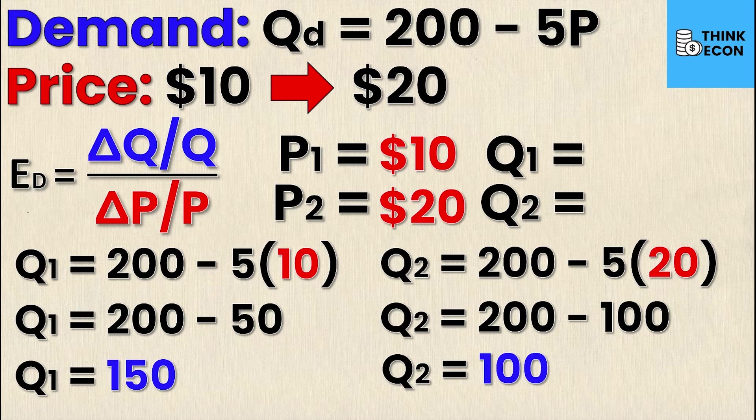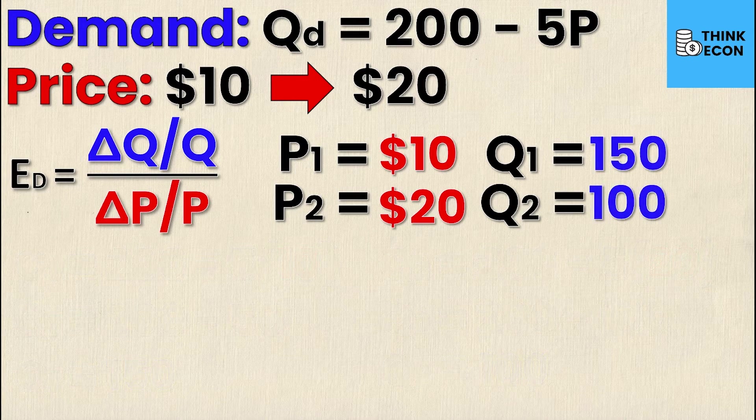So now I have my P1, my P2, my Q1, and my Q2. Now that we have these four necessary values, we can finally solve for elasticity of demand.